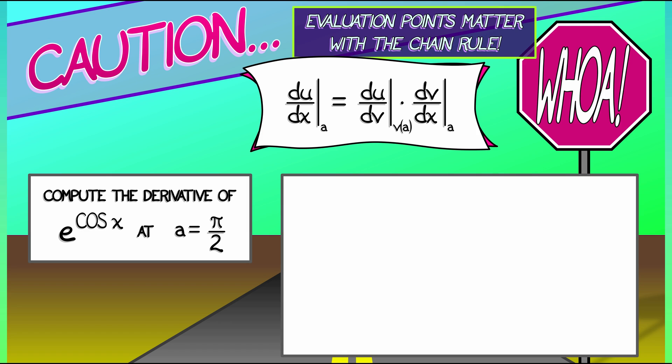It's going to be best if we choose v to be cosine of x. Then the derivative of v with respect to x evaluated at a is going to be what? Well, the derivative of cosine is minus sine. I evaluate that at pi over 2. That gives me negative 1.